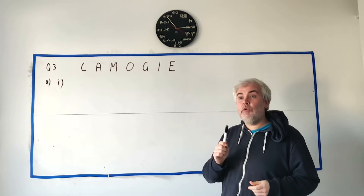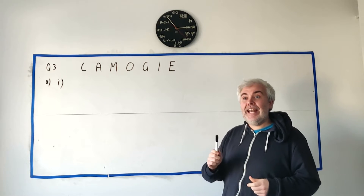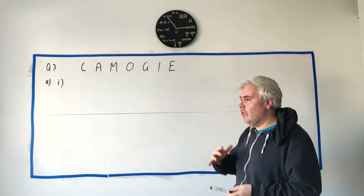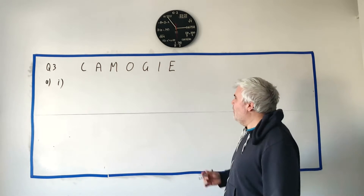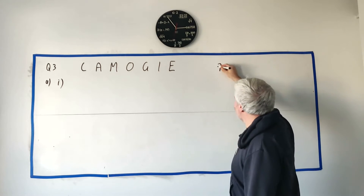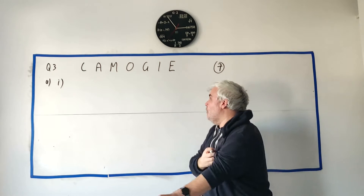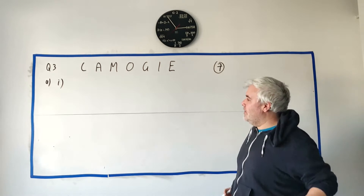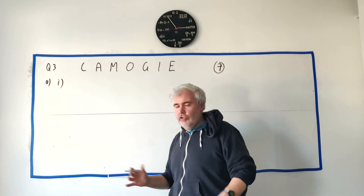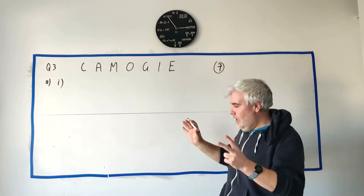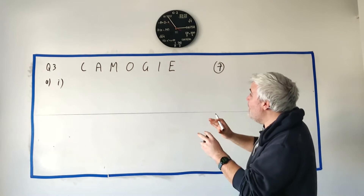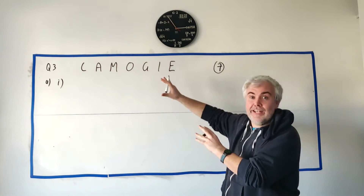In this question they ask us how many ways can the letters of the word 'camogie' be rearranged. This is a very common question, very often asked in the exam. First of all, how many letters are in camogie? There are seven letters. How do we rearrange it? This is a very quick answer but a lot of students get confused, so let me look at it in a couple of different ways.